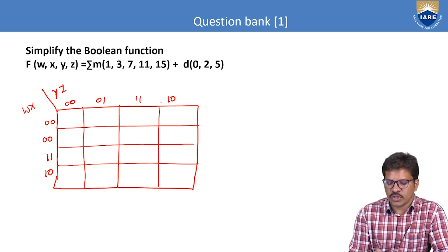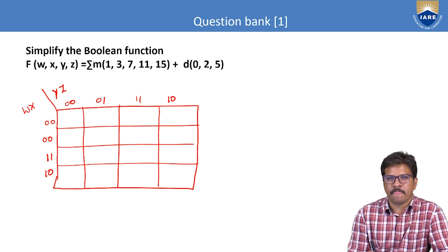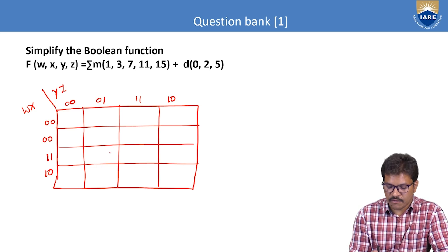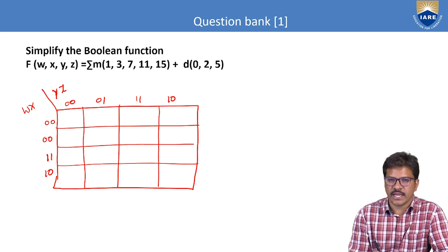The square boxes are numbered in gray code order: 0, 1, 3, 2, 4, 5, 7, 6, 8, 12, 13, 15, 14, 8, 9, 10, 11, 10.